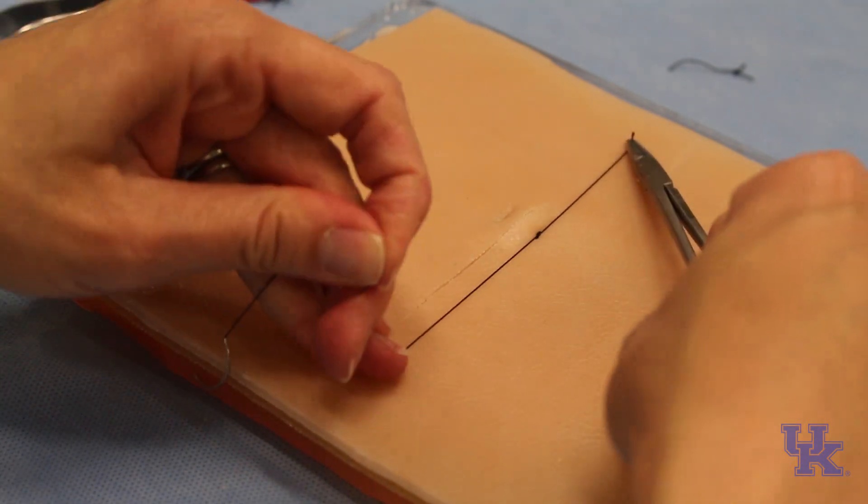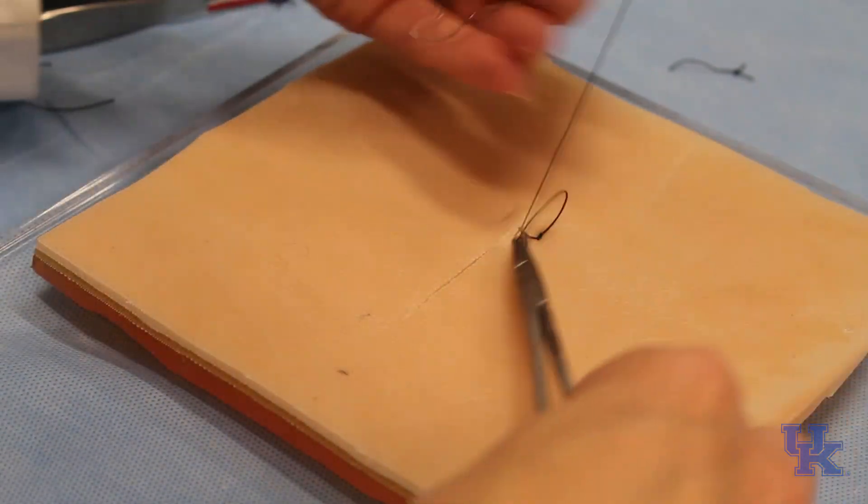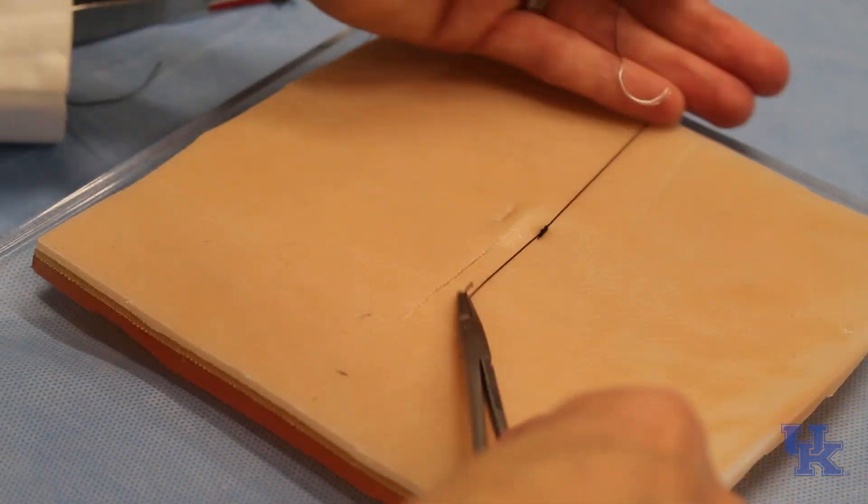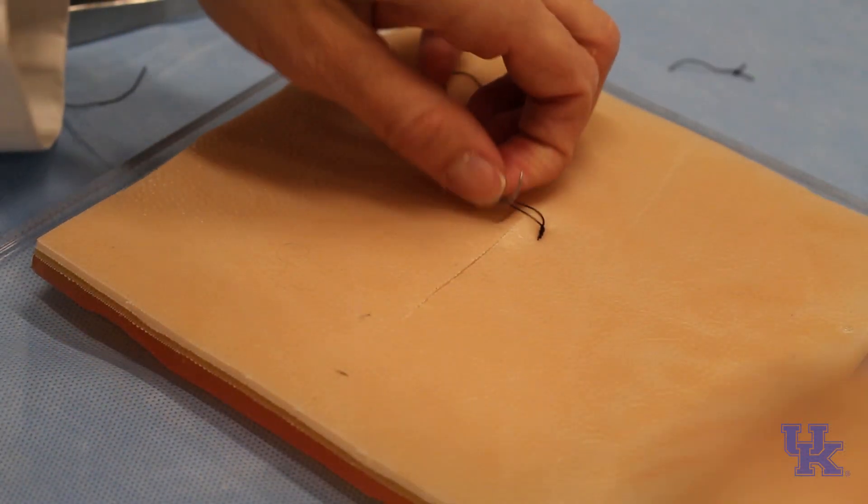This is also a good stitch when your tissue is under tension if you've resected portion of the skin for a skin lesion or something like that. But it nicely everts the skin and that's called a horizontal mattress.